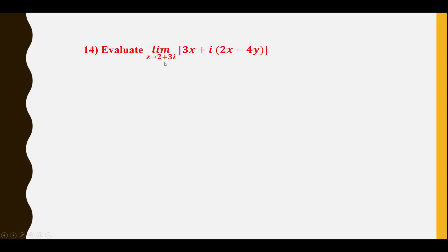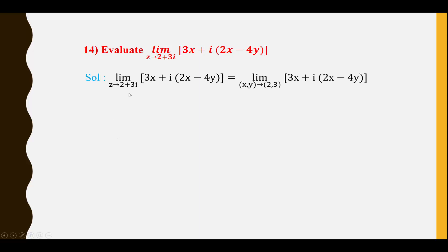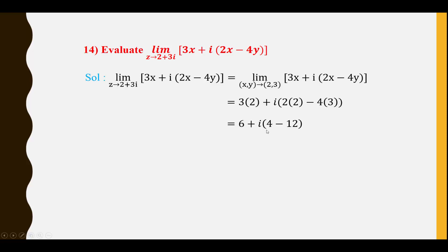Fourteenth question: Evaluate lim(Z→2+3i) [3x + i(2x − 4y)]. Since Z → 2 + 3i means (x, y) → (2, 3), we substitute x = 2 and y = 3: 3(2) + i(2·2 − 4·3) = 6 + i(4 − 12) = 6 + i(−8). Answer is 6 − 8i.